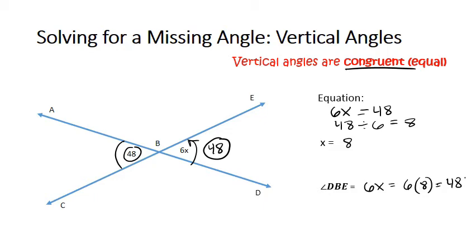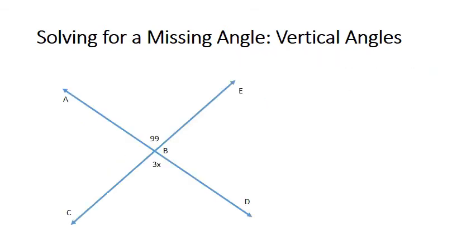Let's look at one more. In this case I again have two angles that are opposite each other. I'm going to set up my equation, so 3x equals 99. To solve for x, I'm going to do 99 divided by 3 to get 33, so I'm going to note that x equals 33.